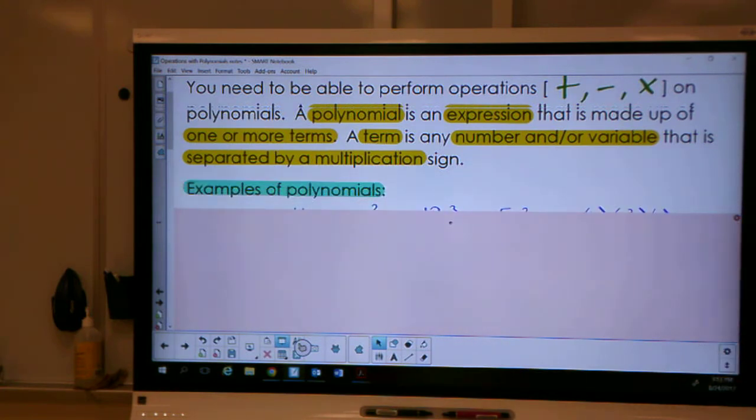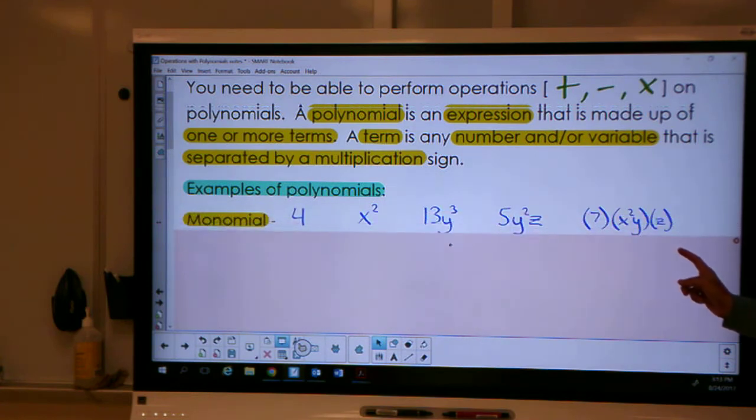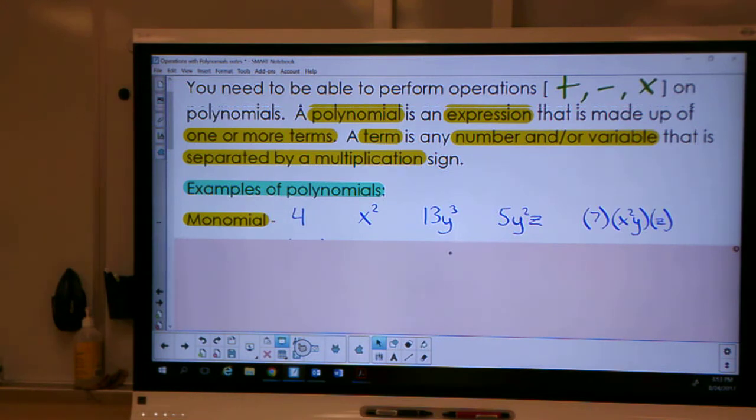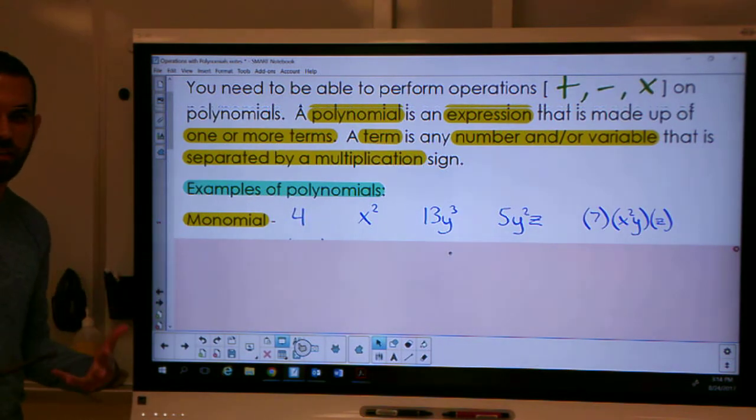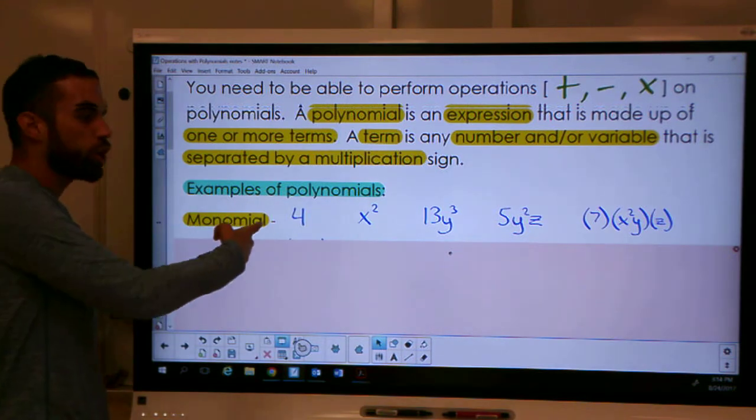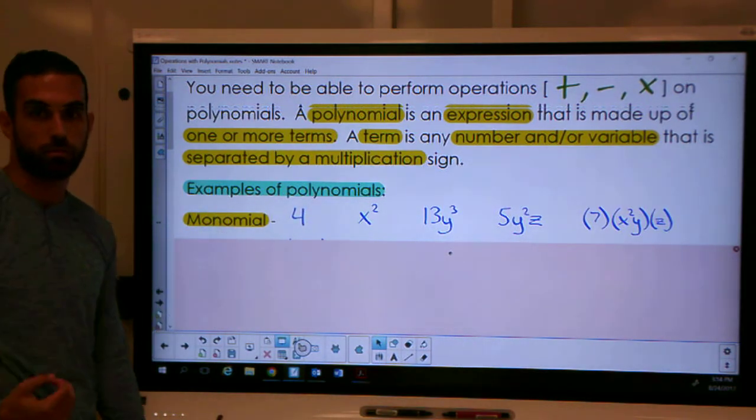To better understand what a polynomial is, let's look at some examples. Can someone please raise their hand and try to pronounce this word correctly? Monomial. Monomial is correct. And what prefix do we notice in that word? Mono. And the word mono typically means the number one. So, how many terms are in each of these polynomials? One. One term. Exactly.